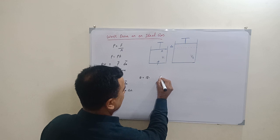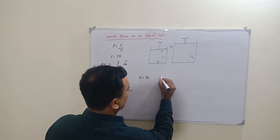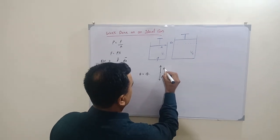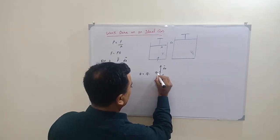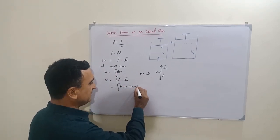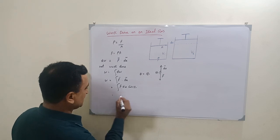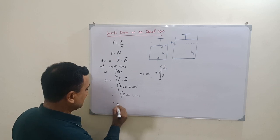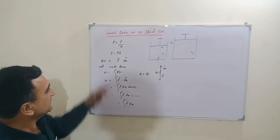The force acting on the gas by the external weight is in the downward direction, and the displacement covered by the piston is in the upward direction — so they are in opposite directions. Since F and dx are in opposite directions, the angle between F and dx is equal to 180 degrees. The value of cos(180°) is equal to minus one, so W = ∫F dx × (−1) = −∫F dx.